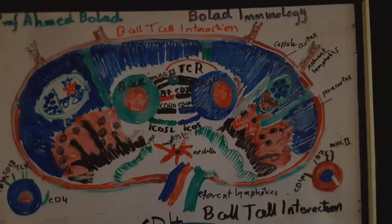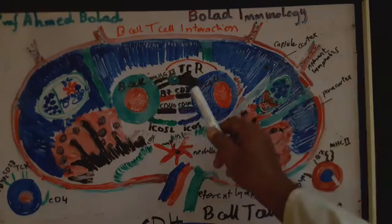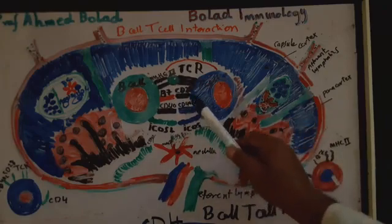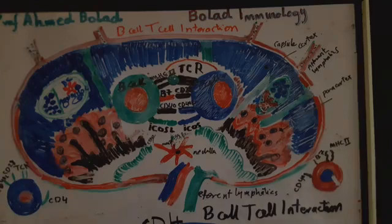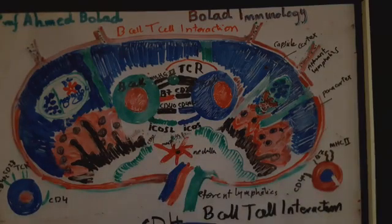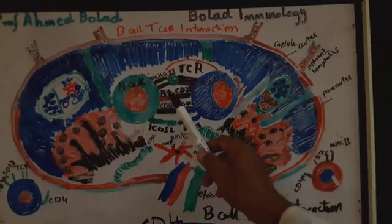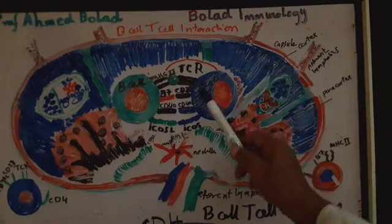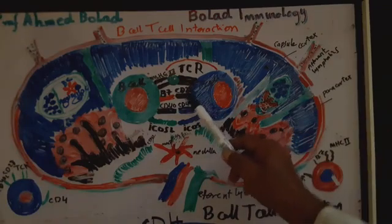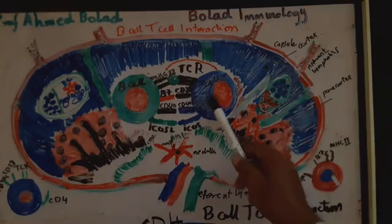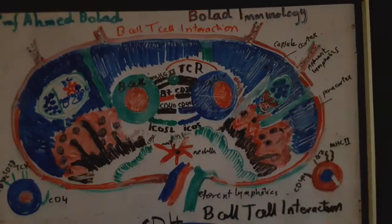According to this interaction between TCR, antigen, and MHC, T-lymphocytes upregulate CD40 ligand. This CD40 ligand interacts with CD40 on the surface of the B-cell, which leads to expression of a molecule known as B7. B7 then interacts with CD28 on the surface of T-lymphocytes, giving a signal to the nucleus for upregulation of cytokine receptors and cytokines.